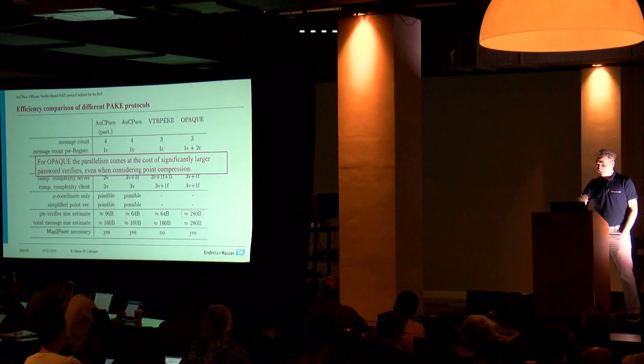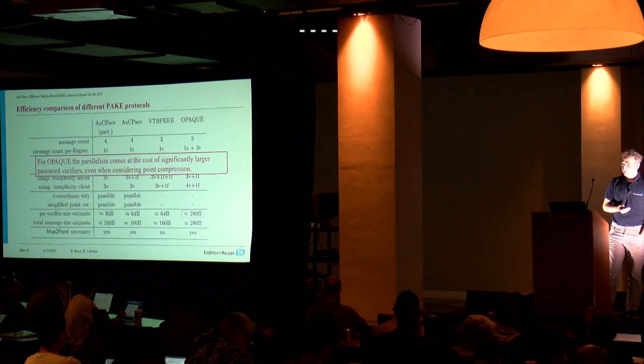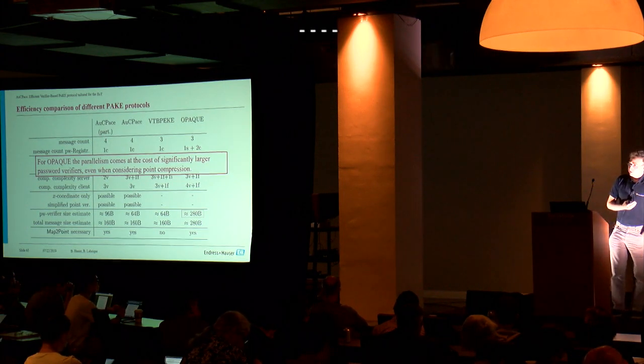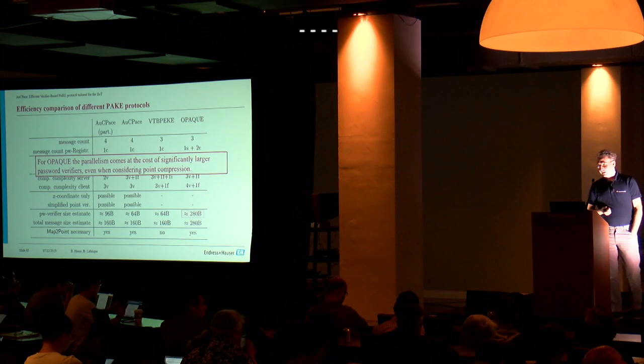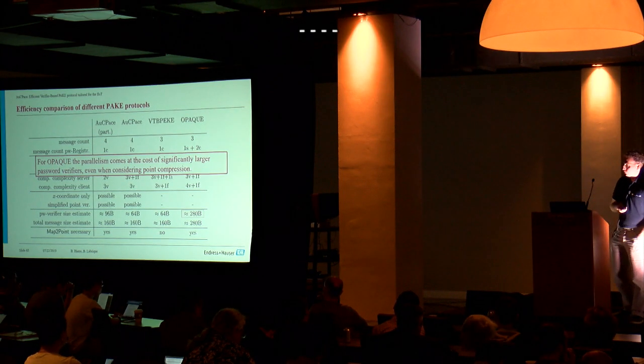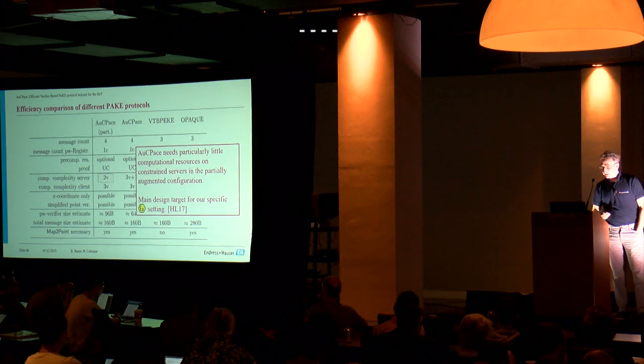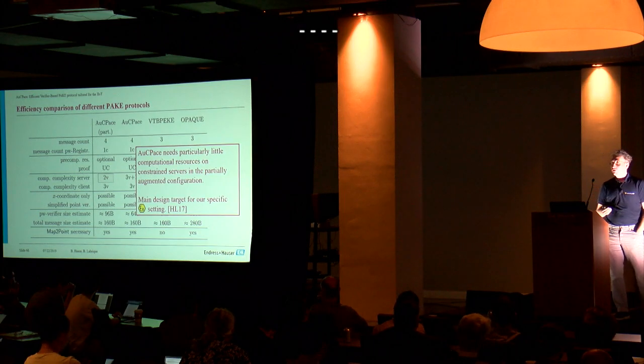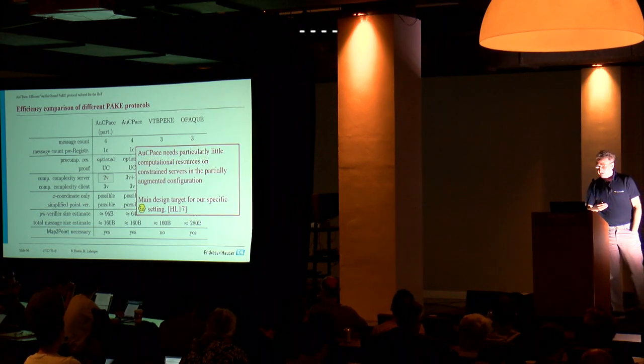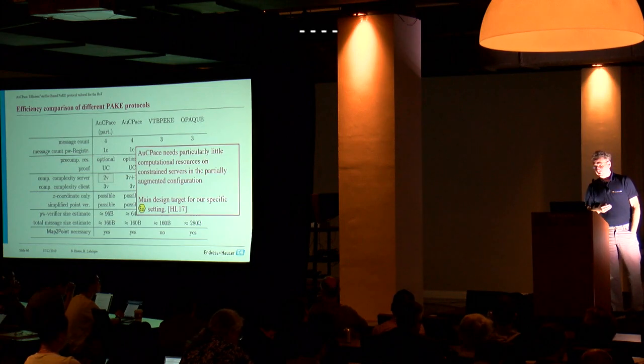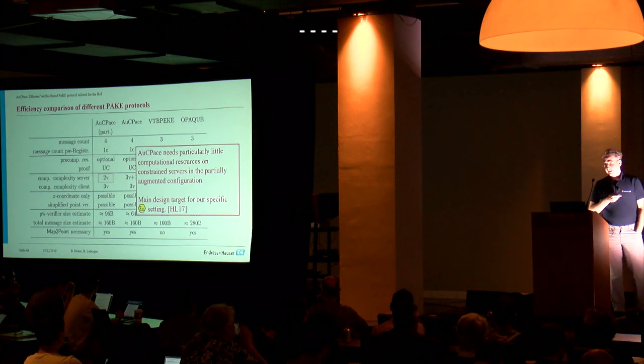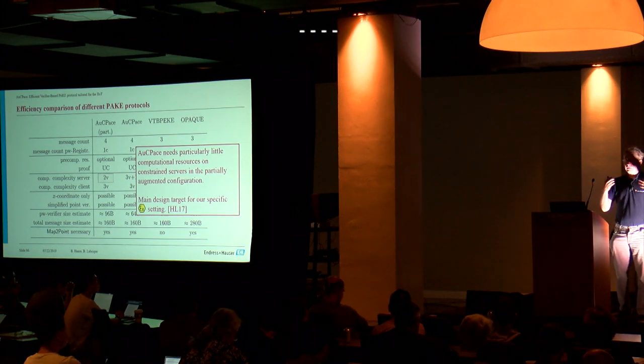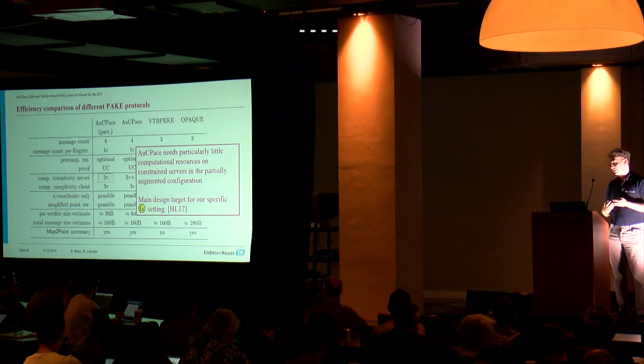OPAQUE and VTBP are monolithic constructions and merge authentication and session key generation. This requires one message less than AugPACHE. For OPAQUE, this parallelism comes at the cost of significantly larger password verifiers even when considering point compression. For OPAQUE, we are around 300 bytes and for AugPACHE, we end up with around 64 bytes. AugPACHE needs particularly little computational resources on constraint servers in the partially augmented configuration. So we only have two variable point scalar multiplications. This has been the main design target for the power constraint settings that are predominated also in CHES.